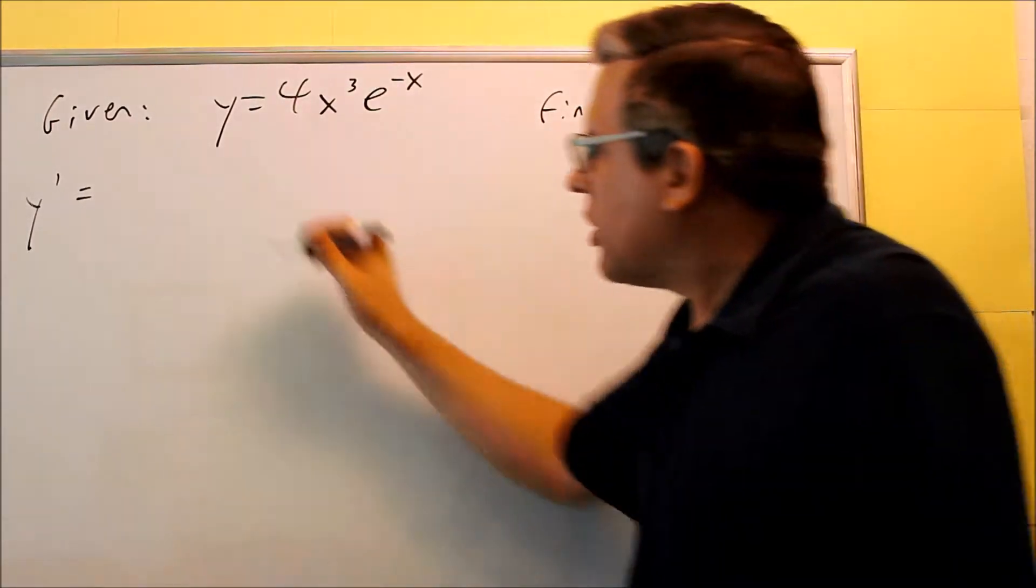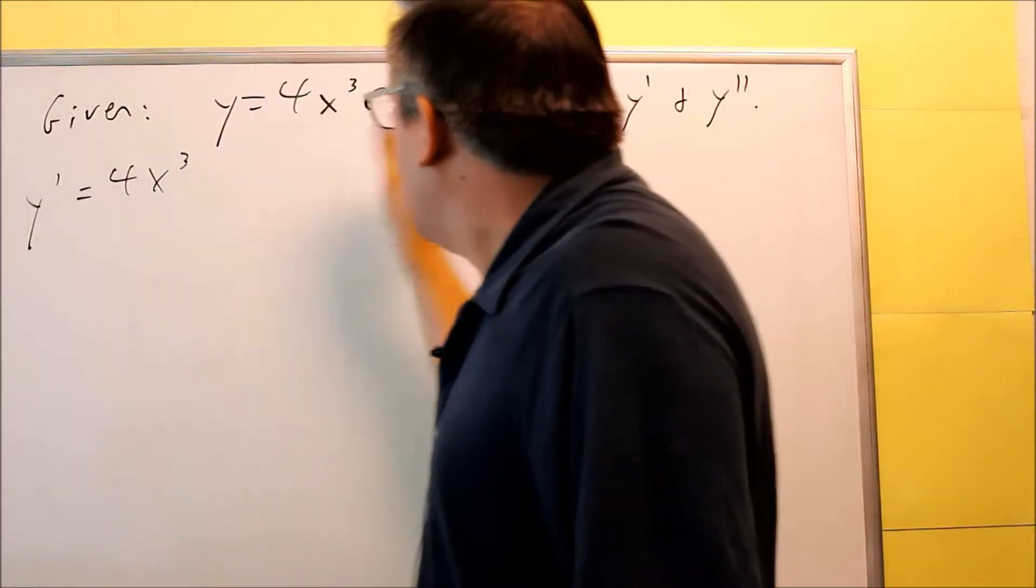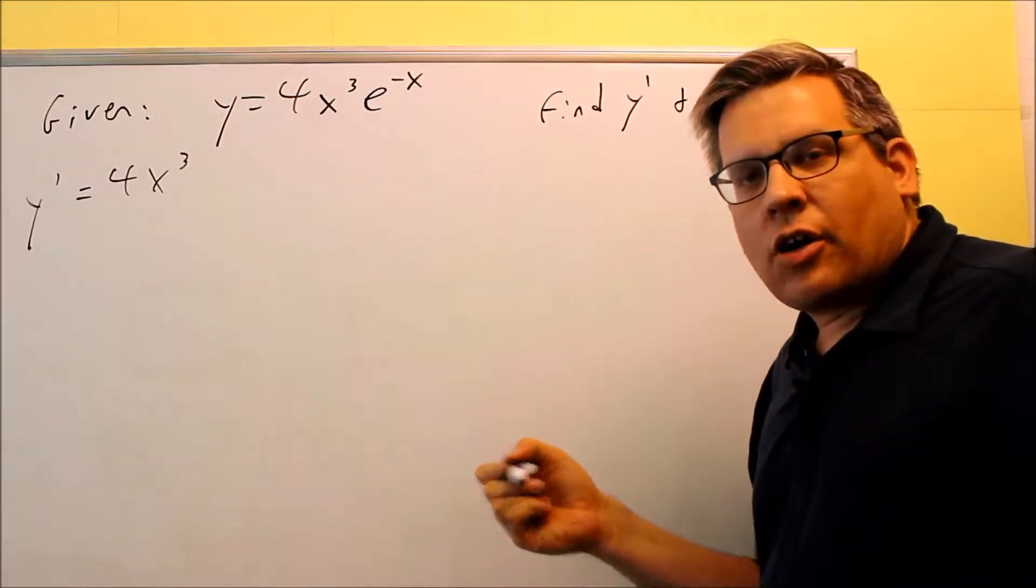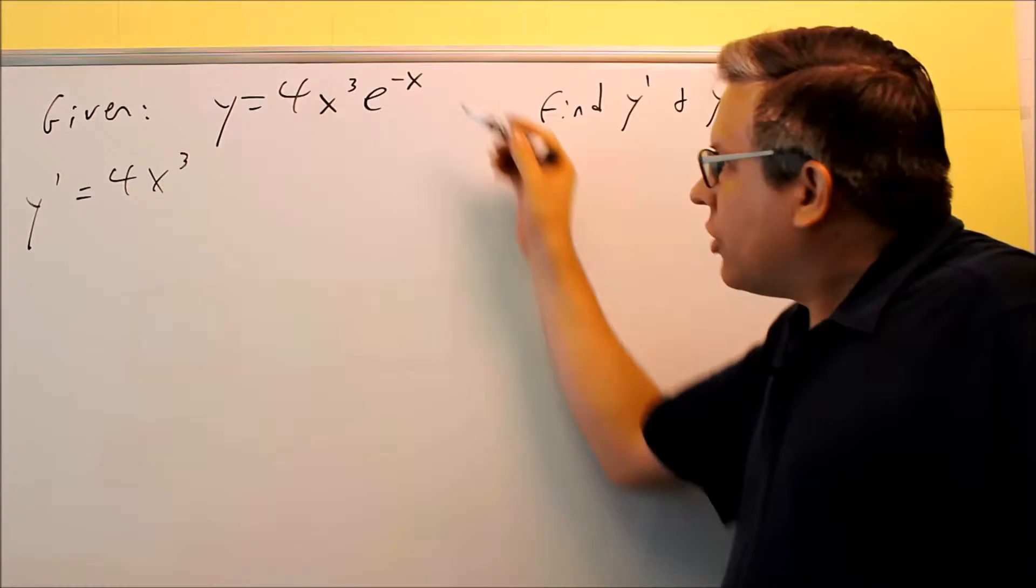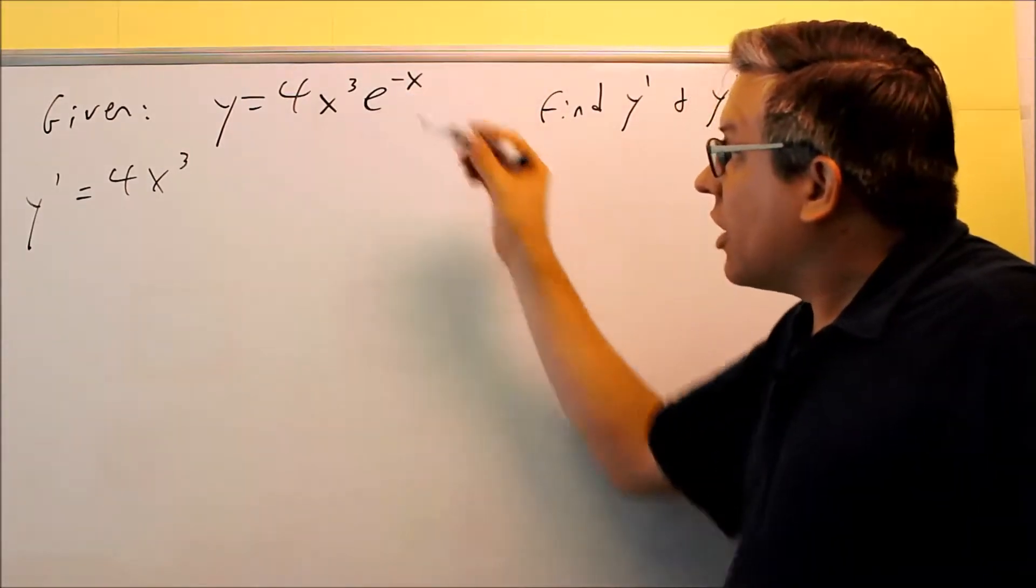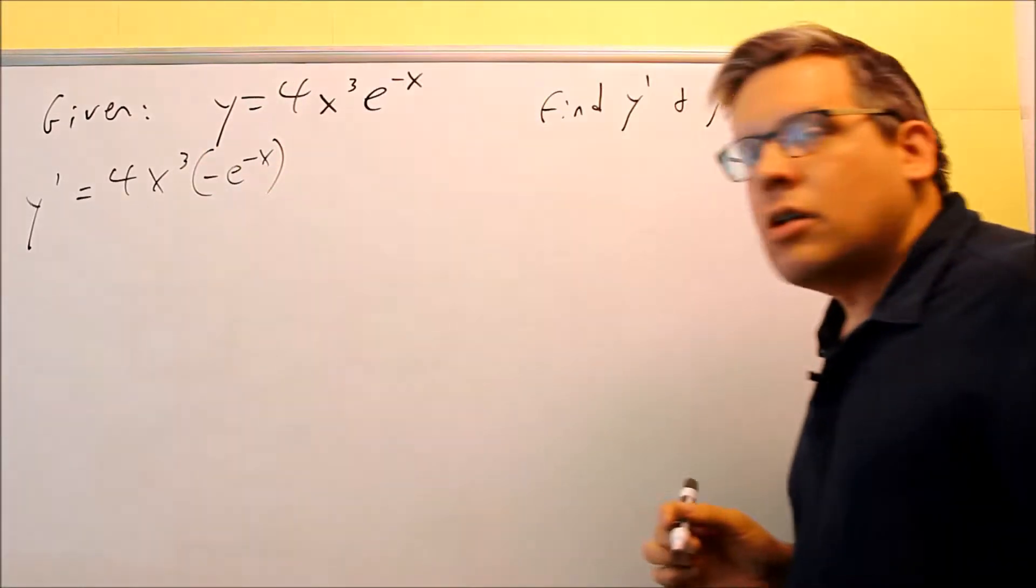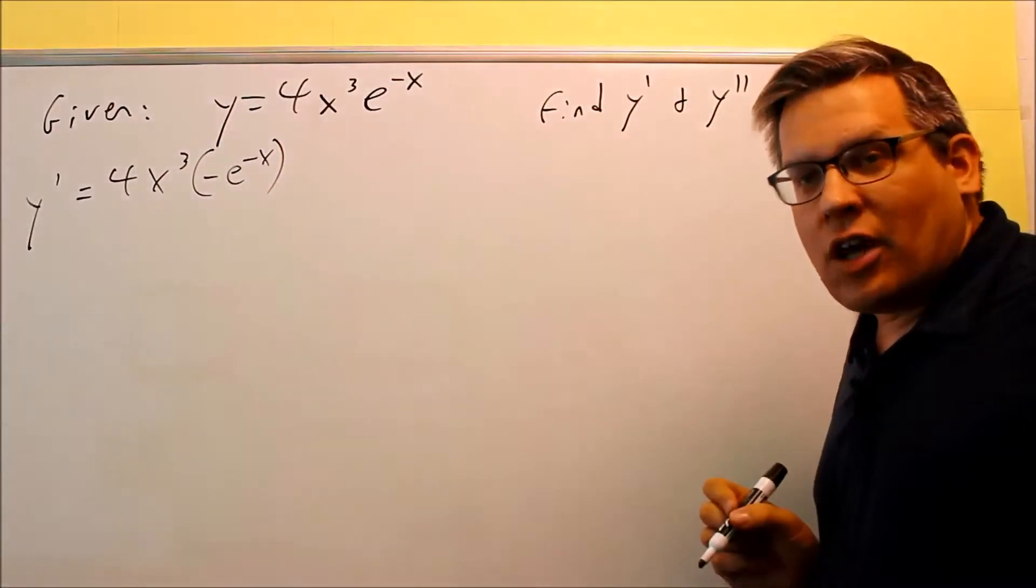So we have the first term times the derivative of the second, so first is 4x³. e^(-x), that derivative we talked about in a previous video, we've derived it, and so we can just use that directly here. That's going to be -e^(-x), that's your derivative of e^(-x).